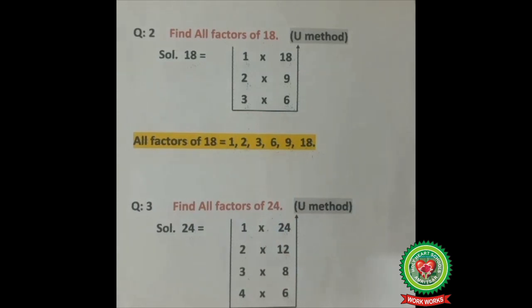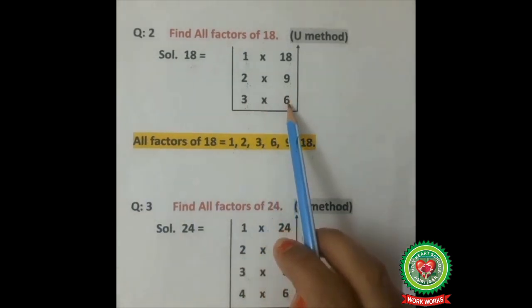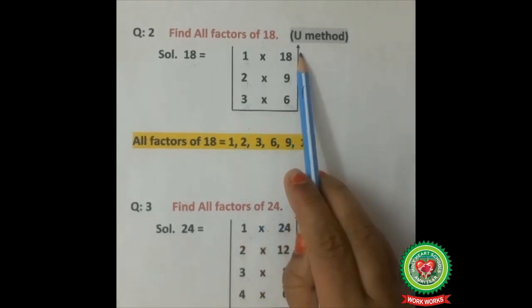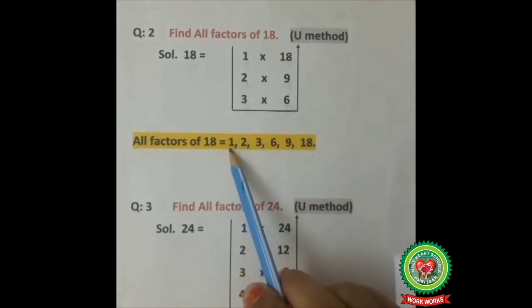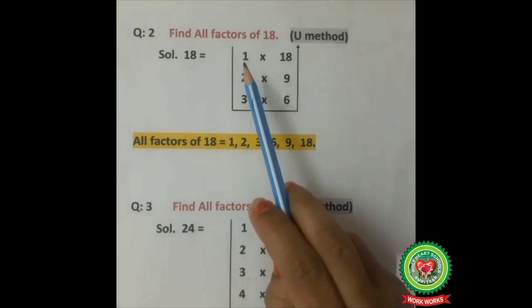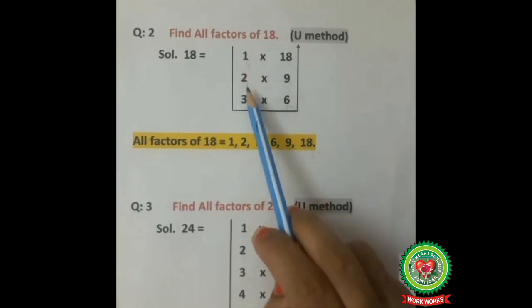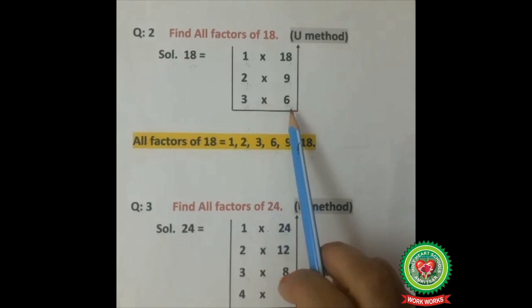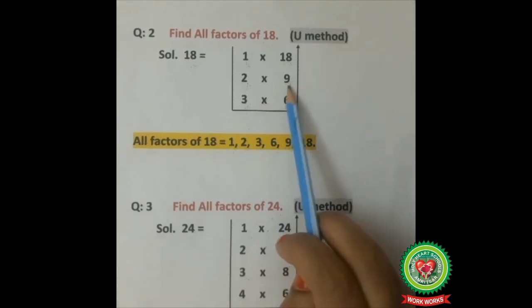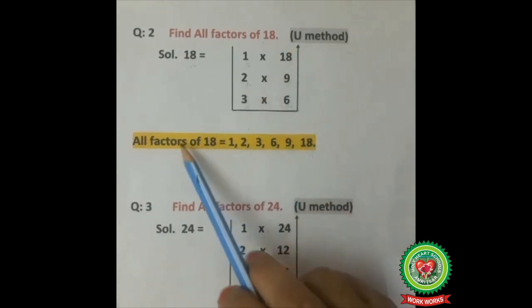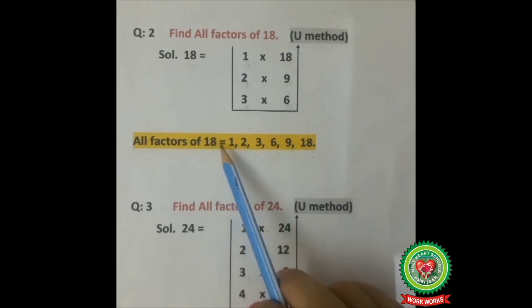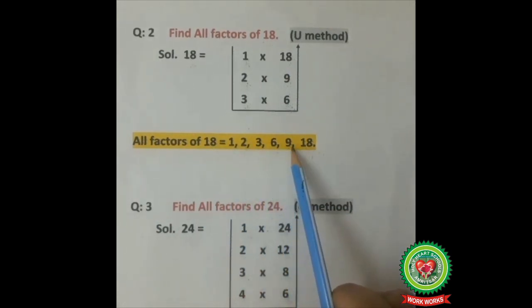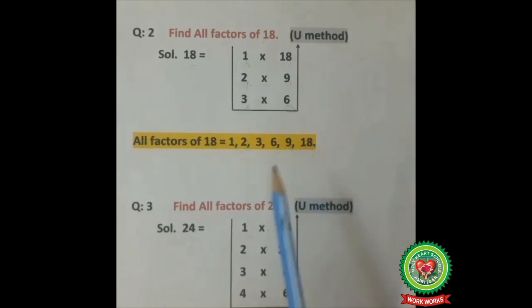Can we write 6 and 3 again? No, because they are already there. We make it like a U shape and write all factors of 18. They are: 1, 2, 3, 6, 9, and 18. So all factors of 18 are 1, 2, 3, 6, 9, and 18.